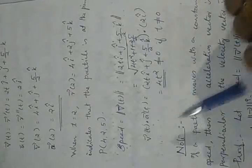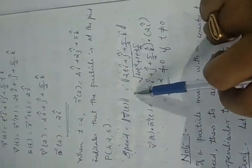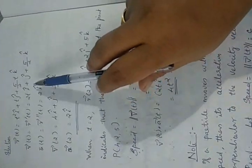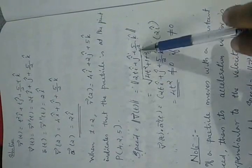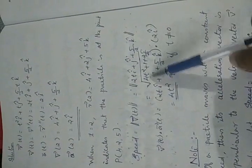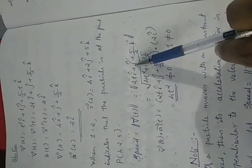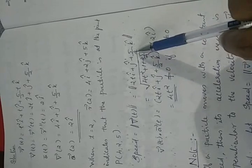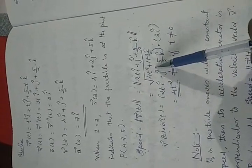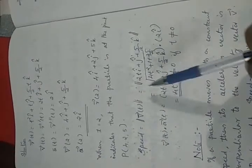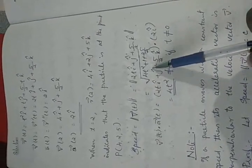Now let us find the speed. Speed = ||V(t)|| = sqrt((2t)² + 1² + (5/2)²) = sqrt(4t² + 1 + 25/4). This speed is a function of t, which means as time varies, the speed also varies. So here speed is not constant.